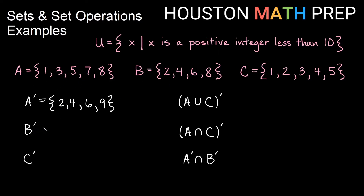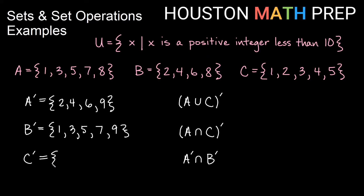B complement — all of the things that are not in B. My odd numbers are not in B; I have 2, 4, 6, 8 in B. So 1, 3, 5, and 7 are not in B. And remember, we're considering up to 9 from my universal set, so 9 is also included. Those are all of the elements that are not in B — that's B complement. For C complement, all the things not in C that are in the universal set: C has 1 through 5, so C complement has the things missing in C, which are just 6, 7, 8, and 9.